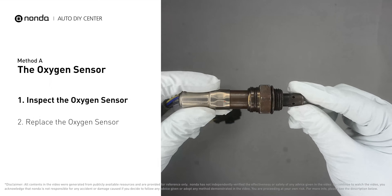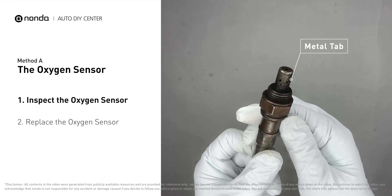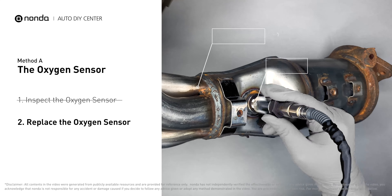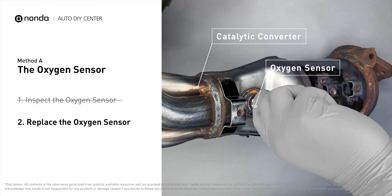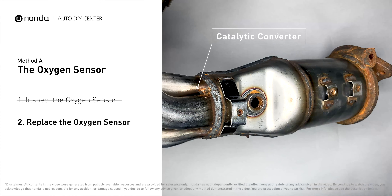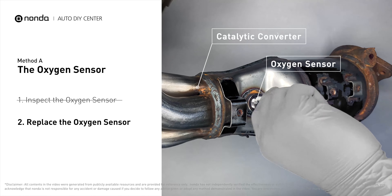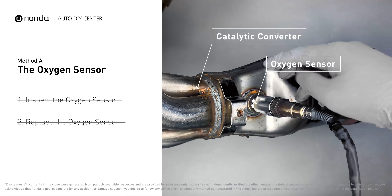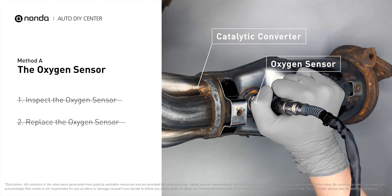and metal tabs for any damages. If damages are found, then replace the oxygen sensor. If there is no damage found on the oxygen sensor, you would need to take your car to consult professional mechanics.